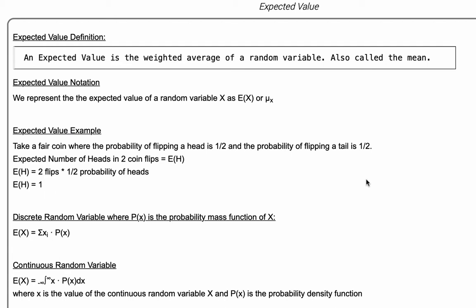Let's talk about this in simpler terms. Expected value is what you expect if you are dealing with probability. We represent the expected value of a random variable X as E(X) or μ sub X.